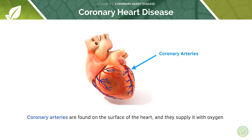Instead we have a separate set of arteries dedicated to supplying our heart muscle — these are the coronary arteries. They come straight off the aorta, as one of the first few branches from the aorta as it leaves the heart to supply the rest of the body from the left ventricle.